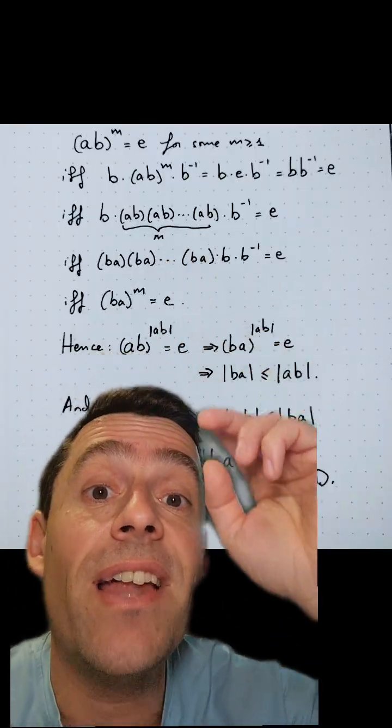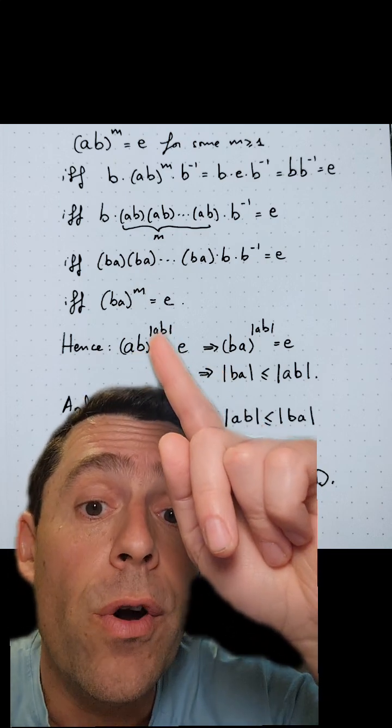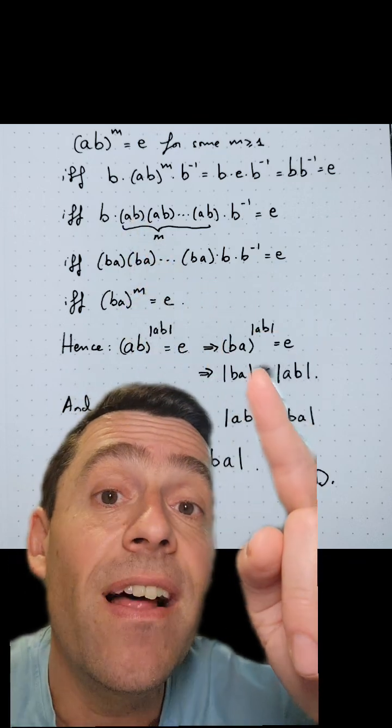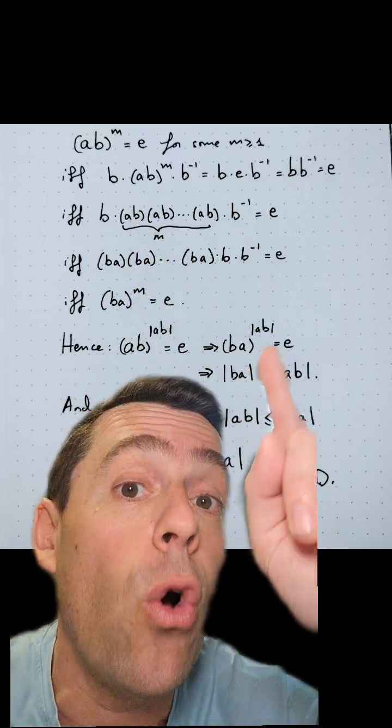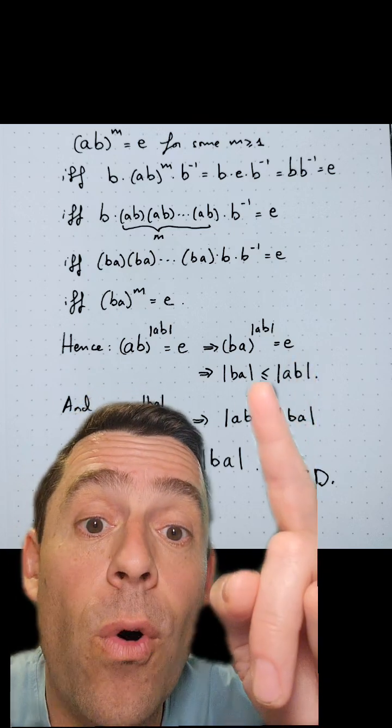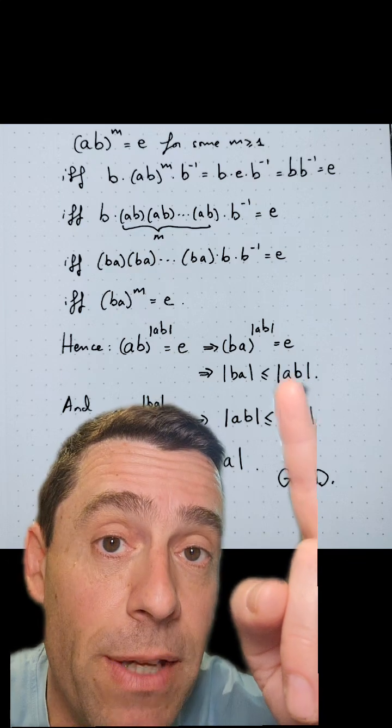Now that I have that equivalence, I can do the following. A times B to its order, the order of A times B, that's the identity. By the equivalence that tells me that B times A to the order of A times B is identity, and therefore the order of B times A is at most that, the order of A times B.